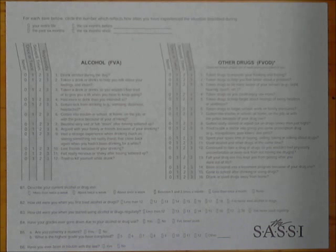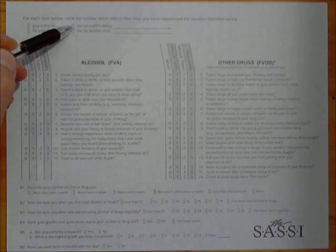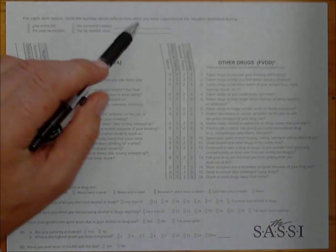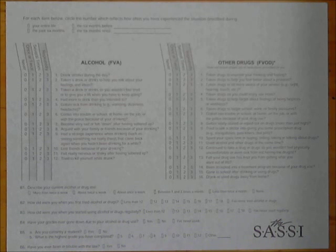Before administering the SASSI-A2, instruct respondents for which time period you would like them to answer the questions. The instrument provides four options: the respondent's entire life, the past six months, the six months before a specified date, or the six months since a specified date. The SASSI-A2 has been used pre-test and post-test style by multiple researchers to evaluate program efficacy, so you can retest much earlier than six months if desired.